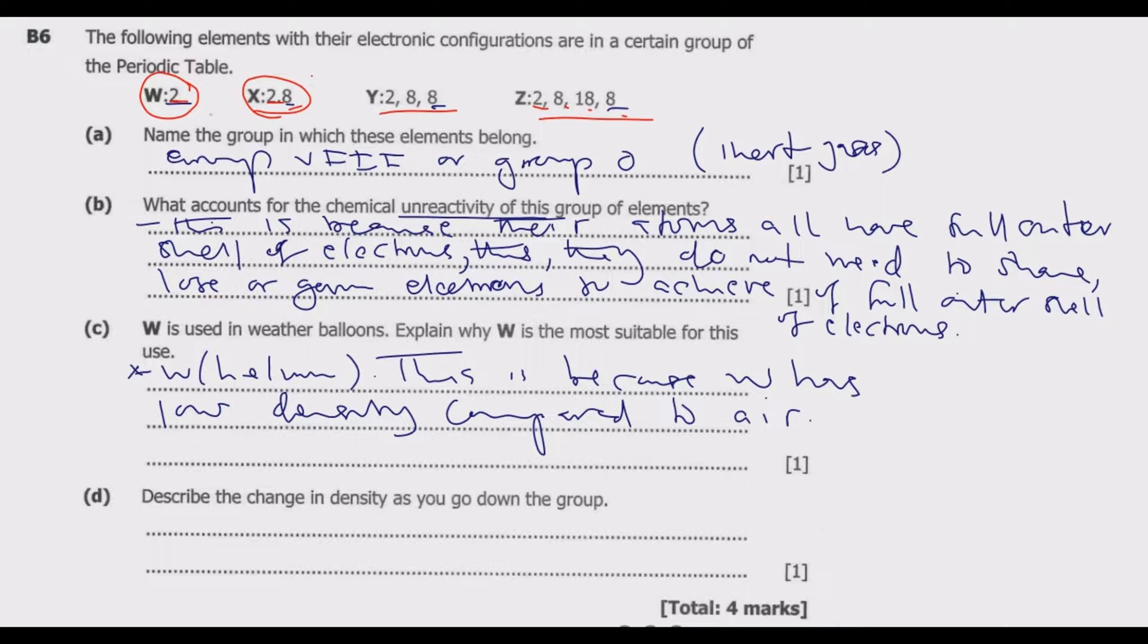Question (d): Describe the change in density as you go down the group. As you go down the group from helium all the way down to this element with four shells, which is krypton...